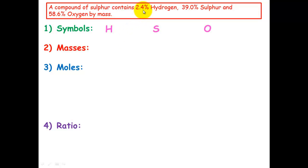Hydrogen is 2.4%. Remember with percent we can just convert those to grams. So for hydrogen, 2.4 grams. That's assuming that we've got 100 grams as a sample. It doesn't matter because it's all ratio-based. So 2.4 grams for hydrogen, 39.0 grams for sulfur, and 58.6 grams for oxygen. Now we want to convert these values into moles.